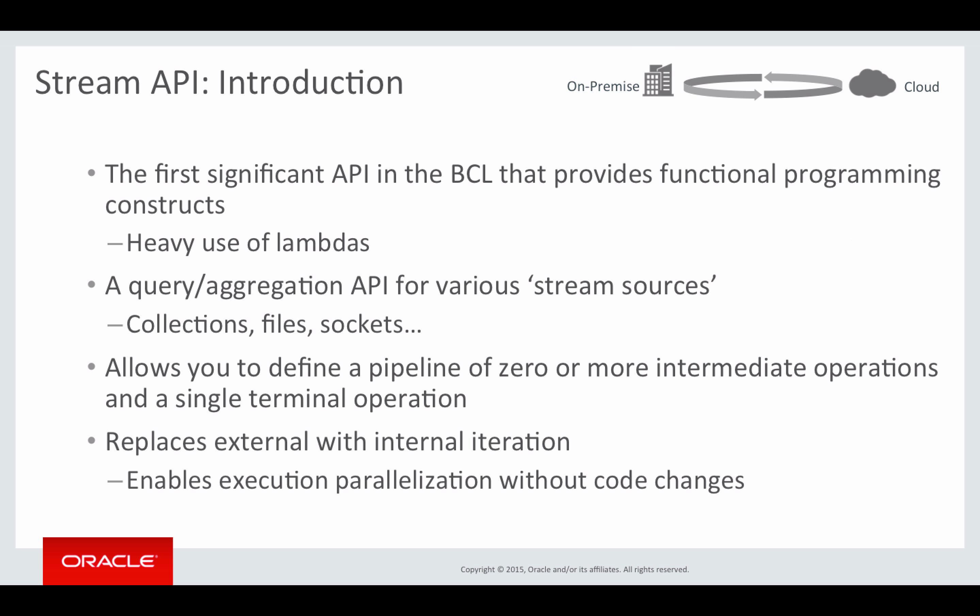So let's get started. The Stream API is the first significant API in the base class library that provides functional programming constructs. It uses lambdas heavily. It was introduced as part of Java 8 to show what we can do with lambdas by applying some functional programming concepts, and it is essentially a query and aggregation API for different stream sources. One of the most common stream sources will be collections, but it can also be applied to files, sockets, and other things that produce streams of data.